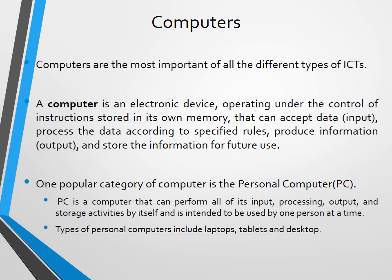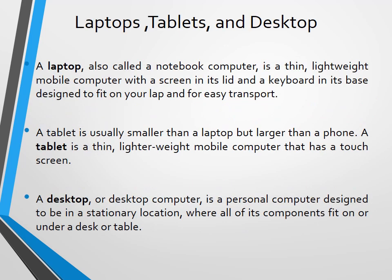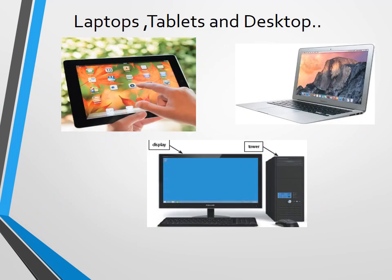Types of personal computers include desktops, tablets, and laptops. A laptop, also called a notebook computer, is a small, lightweight mobile computer with a screen in its lid and a keyboard in its base, designed to fit on our laps for easy transportation. A tablet is smaller than a laptop but larger than a phone; it is a thin, lightweight mobile computer with a touchscreen. The desktop is the biggest of the three — a personal computer designed to be in a stationary location where all components fit on or under a desk or table.